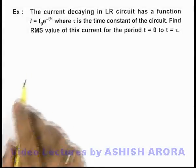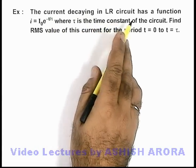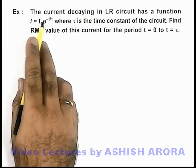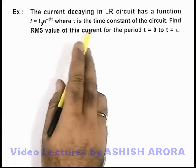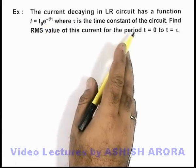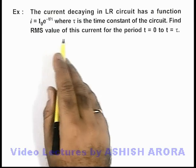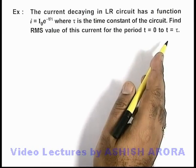In this example, we are given that the current decaying in an LR circuit has a function i-not e to power minus t by tau, where tau is the time constant of the circuit. We are required to find the RMS value of this current for the period zero to tau.